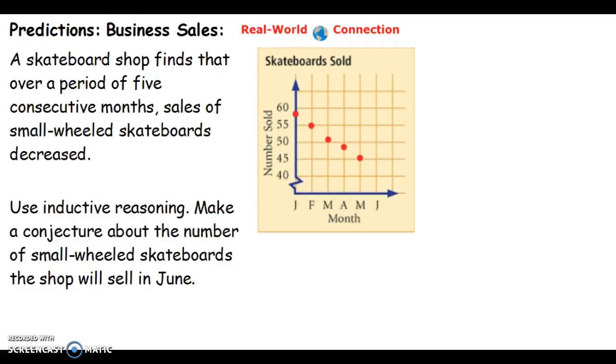Let's go on to business. If you had a business and you had a skateboard shop and you found that you just bought it in January, and you noticed over the five consecutive months after you bought it, the sales of small wheeled skateboards decrease. January you sold somewhere between 55 and 60, maybe 57. February you sold 55, maybe 51 in March. April was under 50. May you're down to 45. So if we use inductive reasoning, inductive reasoning tells us that for June we would expect to sell less than 45 skateboards.